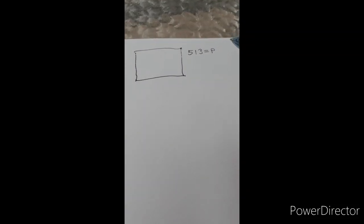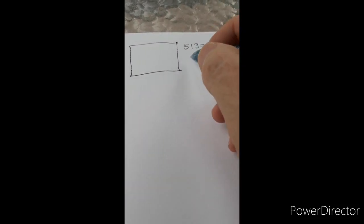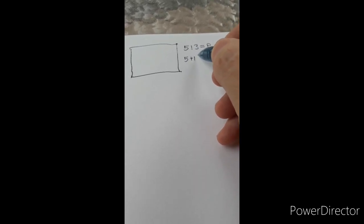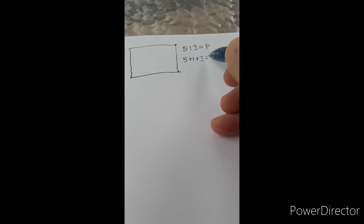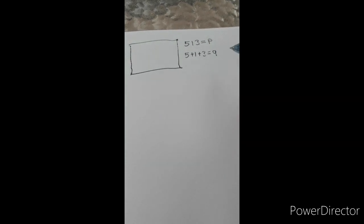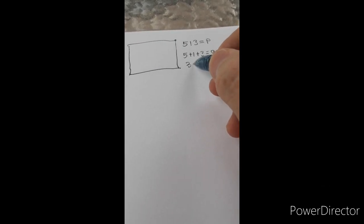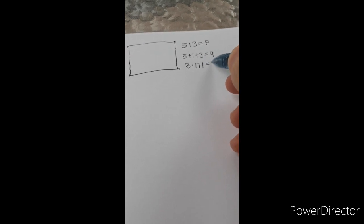So we factor 513 and we can see that 5 plus 1 plus 3 equals 9. The fact that it equals 9 means that 513 is divisible by 3 and also by 9. In fact, if we divide by 3, we get 3 times 171 equals 513.